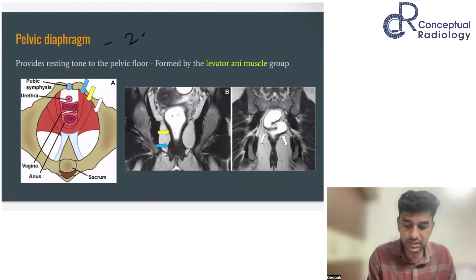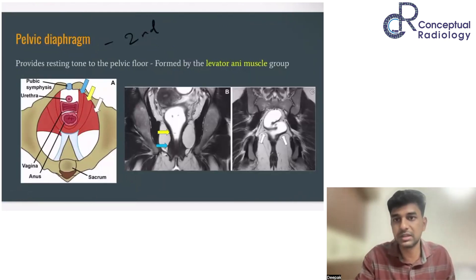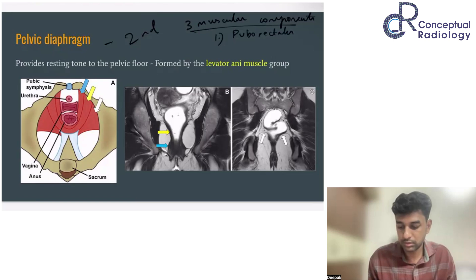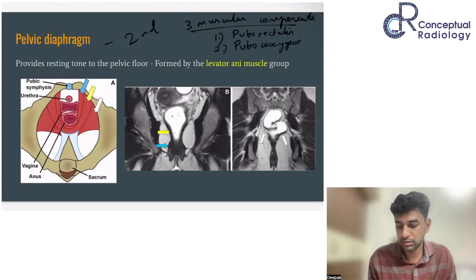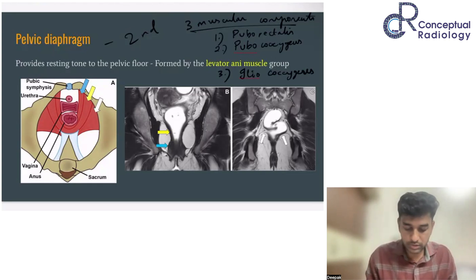The second supporting layer is the pelvic diaphragm, which is formed by the levator ani group of muscles. It consists of three muscular components: first, the puborectalis; second, the pubococcygeus; and third, the iliococcygeus. These three muscles form the pelvic diaphragm from anterior to posterior. In the illustrative image, the blue arrow indicates the puborectalis.